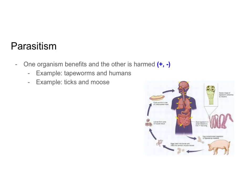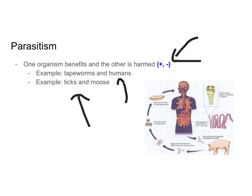The last type of symbiotic relationship is parasitism, where one benefits and the other is harmed — a positive-negative relationship. This is different from predator-prey because in predator-prey one organism is eating the other, which is not happening in parasitism. An example is a tapeworm in a human — the tapeworm lives inside the human and eats the food the human is consuming, benefiting itself while the human can't digest and use that food for nutrients. Another example is a tick and a moose: the tick sucks the moose's blood to get nutrients, but the moose is harmed. Again, this is not predator-prey because the tick isn't eating the moose.